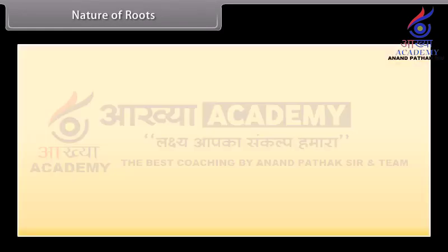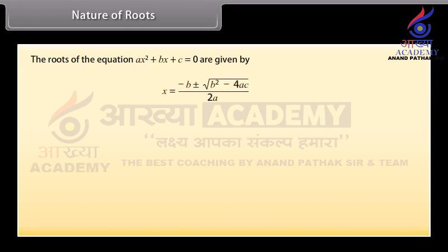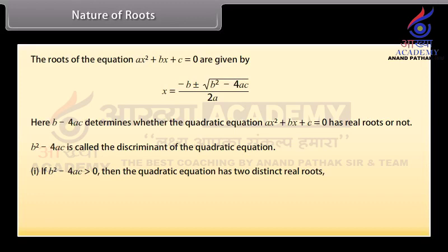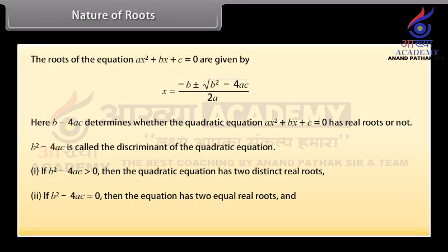Nature of roots. The roots of ax squared plus bx plus c equals zero are given by x equals (minus b plus or minus square root of b squared minus 4ac) all over 2a. Here, b squared minus 4ac determines whether the quadratic equation has real roots or not. b squared minus 4ac is called the discriminant of the quadratic equation. If b squared minus 4ac is greater than zero, the equation has two distinct real roots. If b squared minus 4ac equals zero, the equation has two equal real roots. If b squared minus 4ac is less than zero, the equation has no real roots.